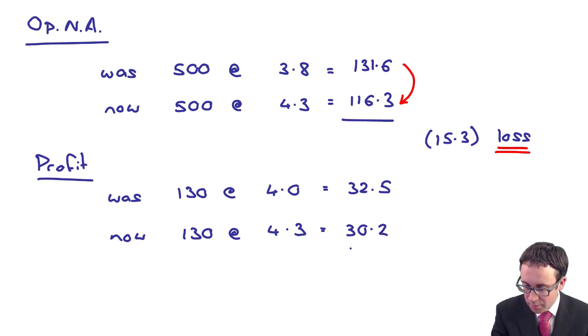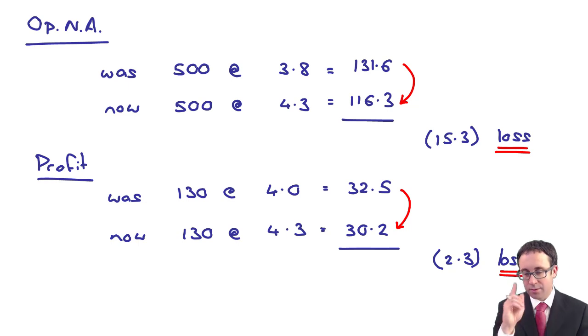Your profit figure for the year. Your profit figure was 130 at the average rate of 4. It's now being consolidated as 130 at 4.3. So it was translated in the statement of profit or loss to give us a 32.5 million. It's now 30.2.